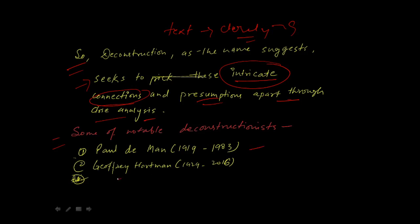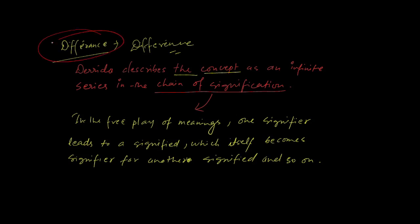Some notable deconstructionists are Paul de Man and Geoffrey Hartman. Here's an important term: 'différance.' You'll find an 'a' instead of 'e.' It was a misspelled word of 'difference,' but later it became a term with specific meaning. Derrida describes this concept as an infinite series or chain of signification.